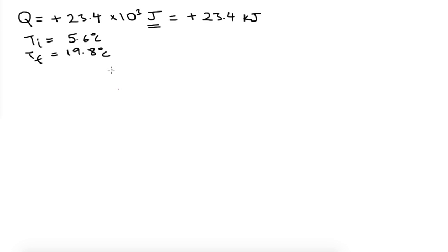And finally, we can calculate delta T, which is the difference in temperature. Tf minus Ti, which is 19.8 minus 5.6 degrees Celsius, which is equal to 14.2 degrees Celsius.